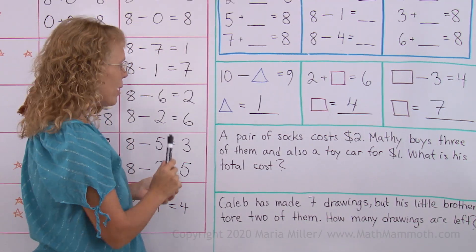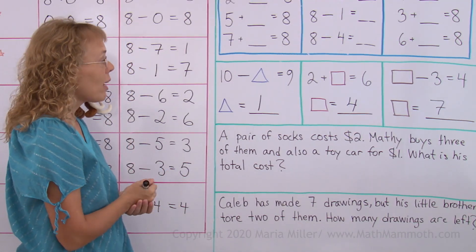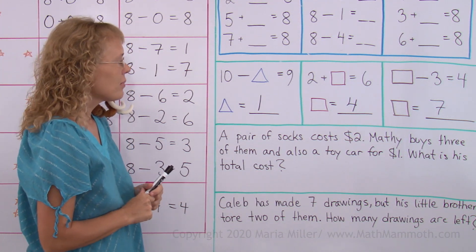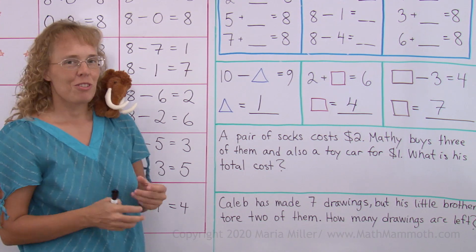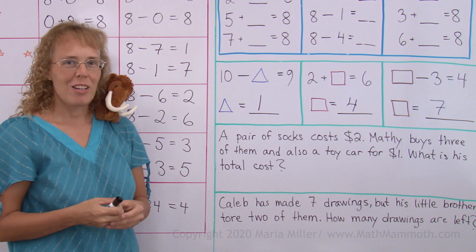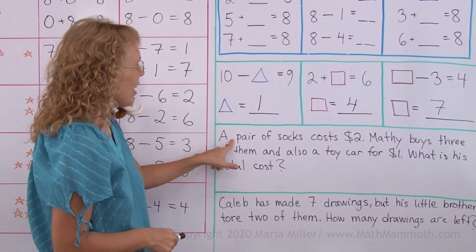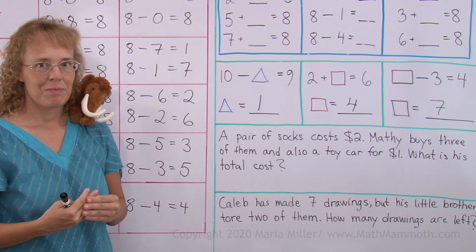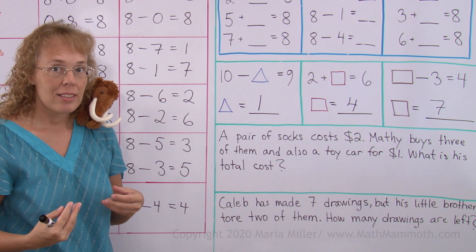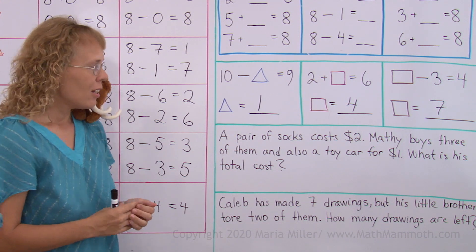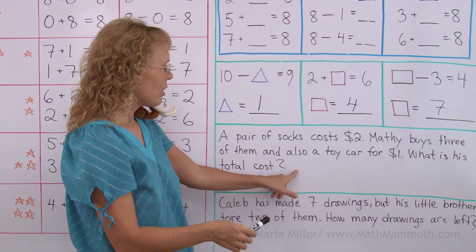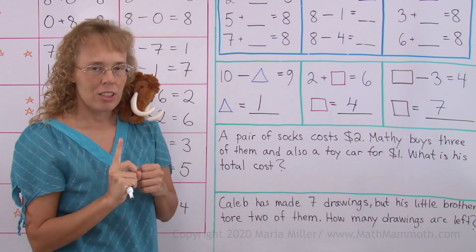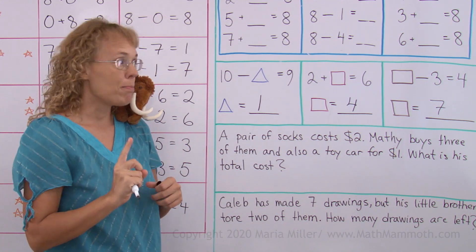Lastly, some word problems. A pair of socks costs $2. Matty buys 3 of them, 3 pairs, and also a toy car for $1. What is his total cost? Well, that's good for Matty, he gets to buy some socks for himself. Remember how he was needing my socks? What shall we do in this problem to find the total cost? Will you add or subtract? Or both? What kind of addition or subtraction or whatever will I write here?